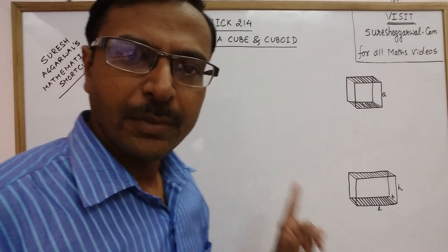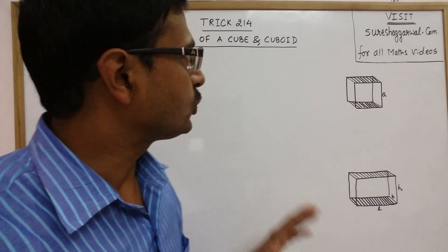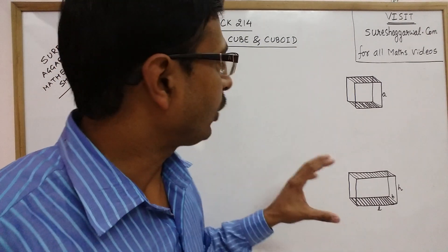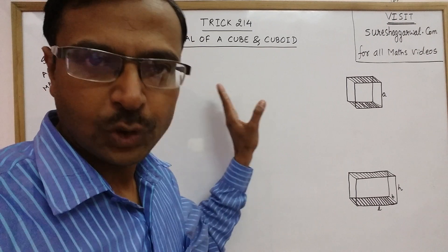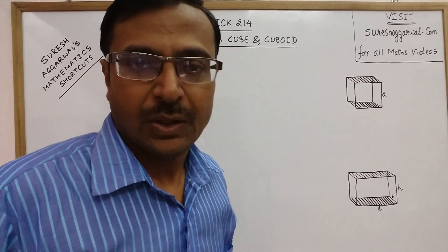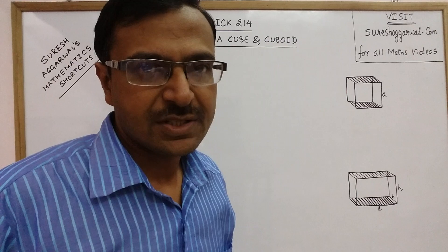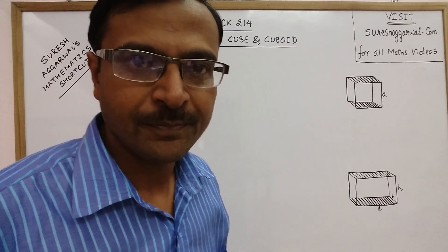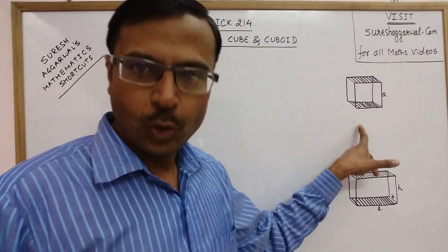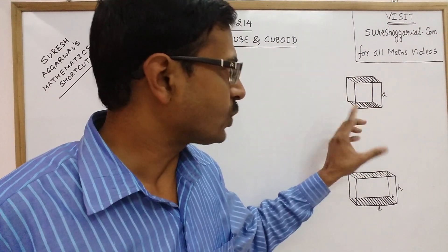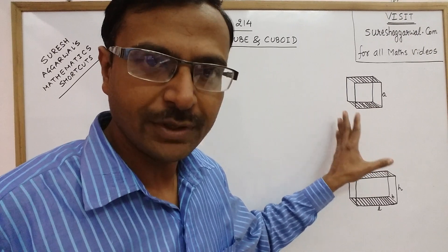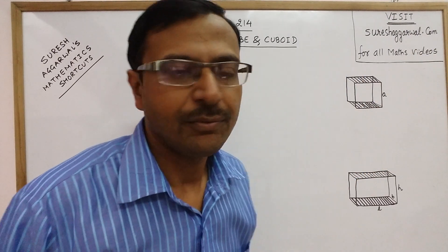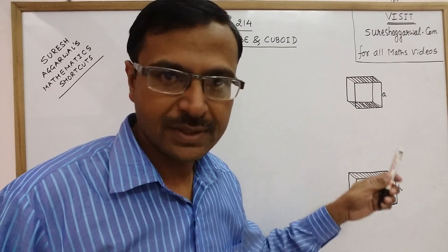Hello friends, in trick number 214 today, I am going to tell you how we can find the formula for the diagonal of a cube or a cuboid. Now to remember these two formulas, we just need to know the basic concept of Pythagoras theorem. This is a cube and all sides are equal, so I have assumed the side of the cube as A. Now I will derive this formula for finding the diagonal of this cube.